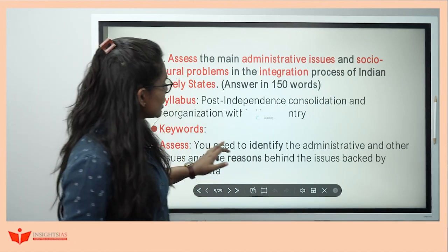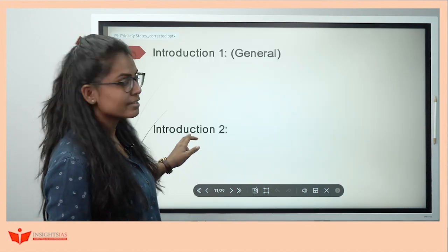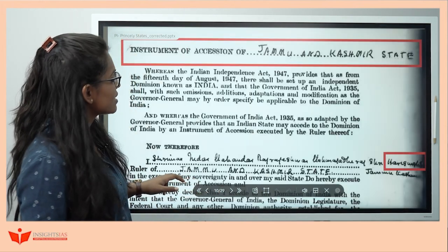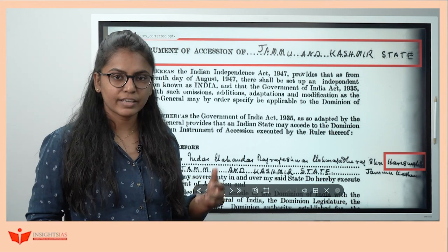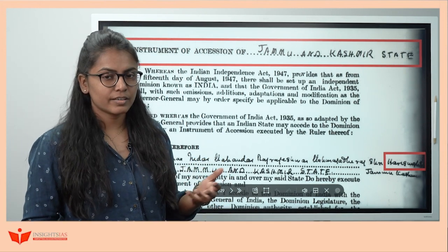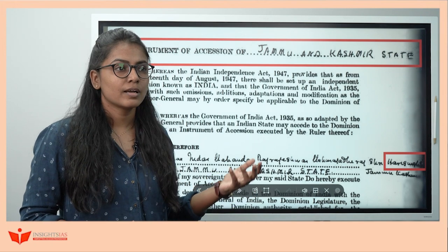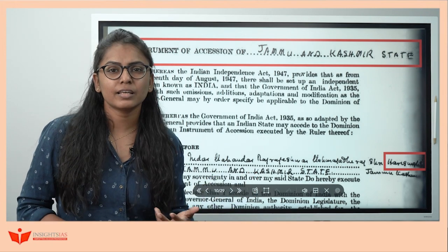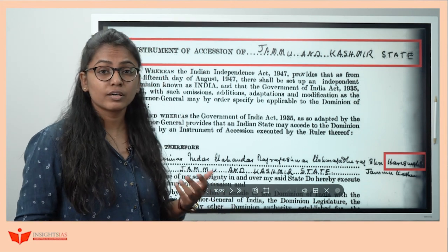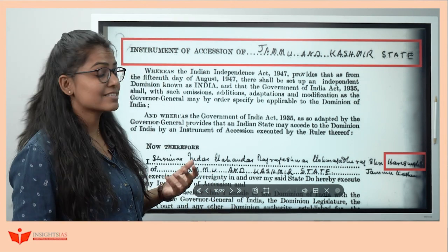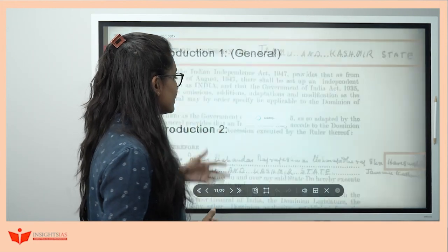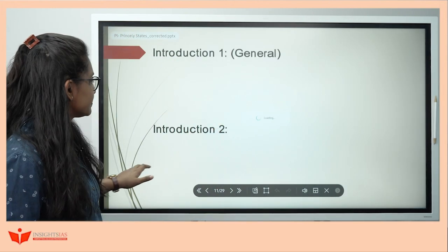With nearly 562 princely states, integrating them was a bit tricky. It was actually the statesmanship of our leaders like Sardar Patel and VP Menon that we are the way we are now. Once we are done with the introduction, let us see how to generate points for the body.